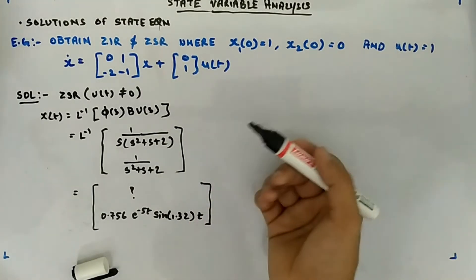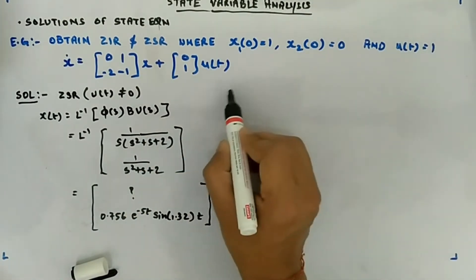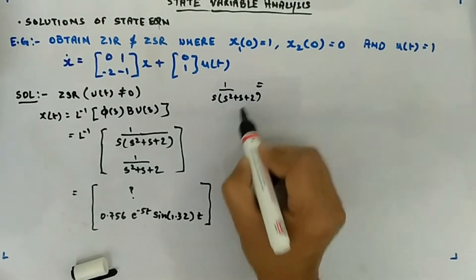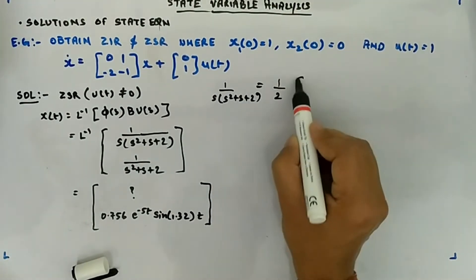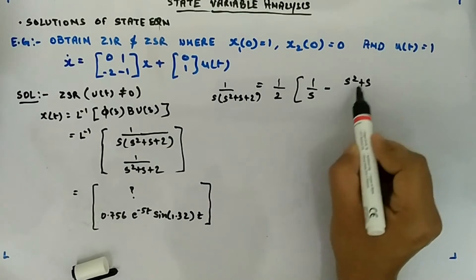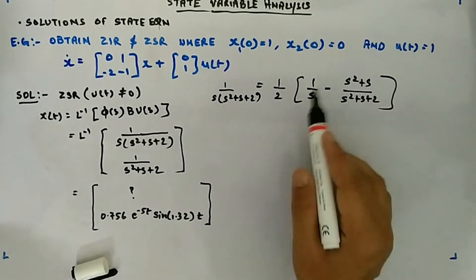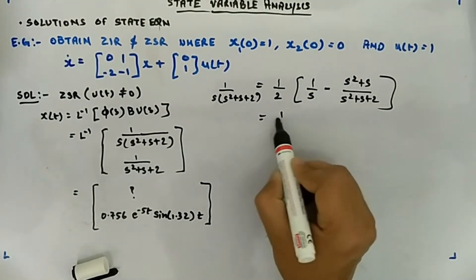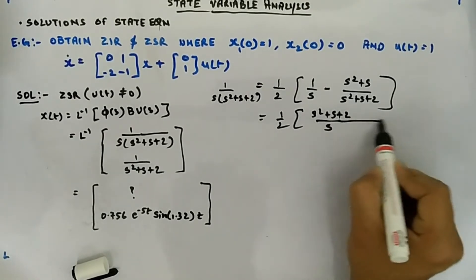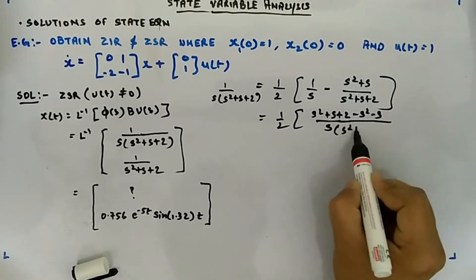Let me solve and cross-check. The term 1/(s·(s²+s+2)) can be written as (1/2)·[1/s − (s²+s)/(s²+s+2)]. If I take the LCM, I get (1/2)·[(s²+s+2 − s²−s) / (s·(s²+s+2))], and after cancellation you get the original expression back, confirming the decomposition.